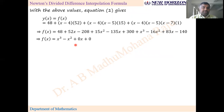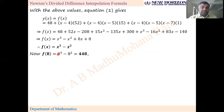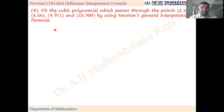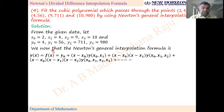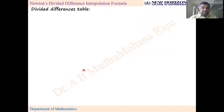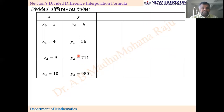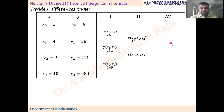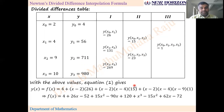Since three to four values are needed, it is better to find the polynomial first and then substitute the required points f(8), f(9), and f(15). Next problem: Fit the cubic polynomial passing through the points (2, 4), (4, 56), (9, 7), (11, 10), and (9, 80) using Newton's general interpolation formula. List x and y values, write the formula, construct the divided differences table with first, second, and third order differences, substitute, and get the polynomial.